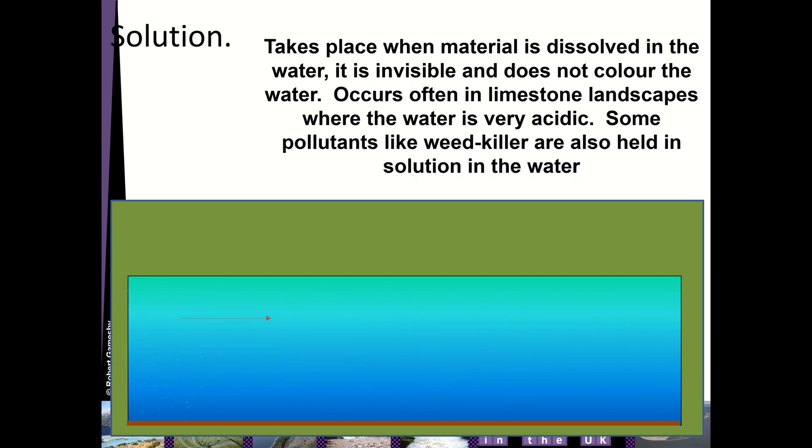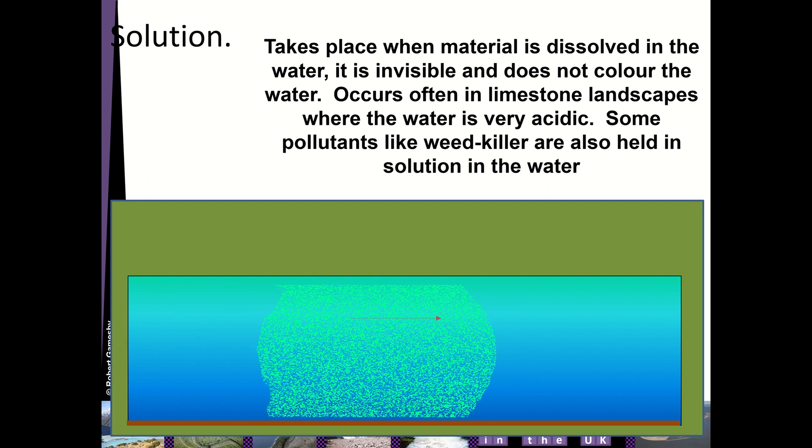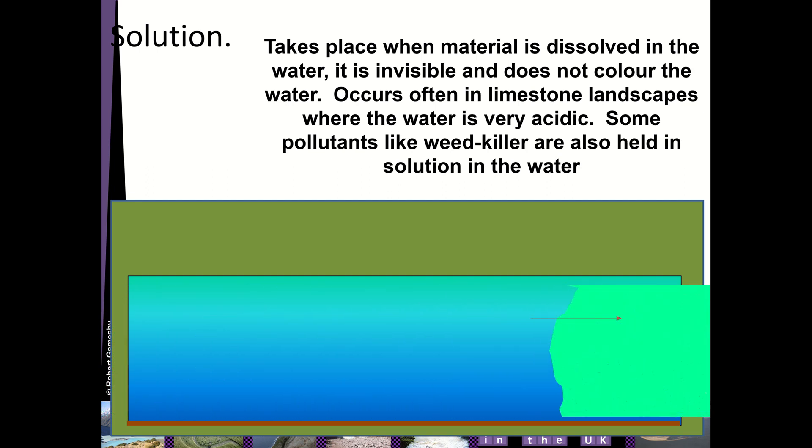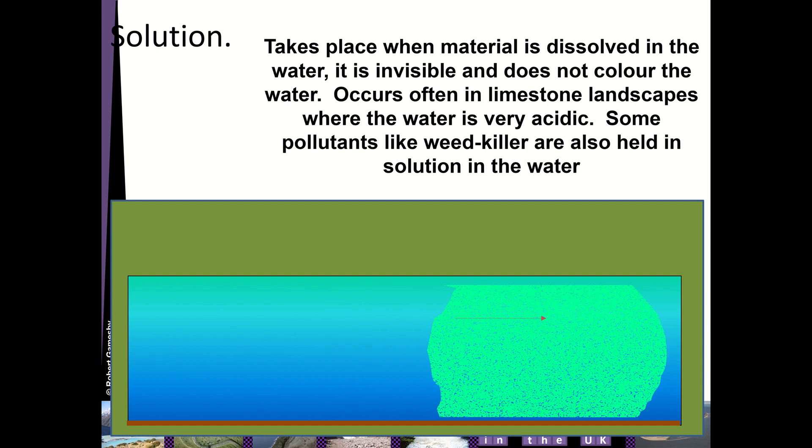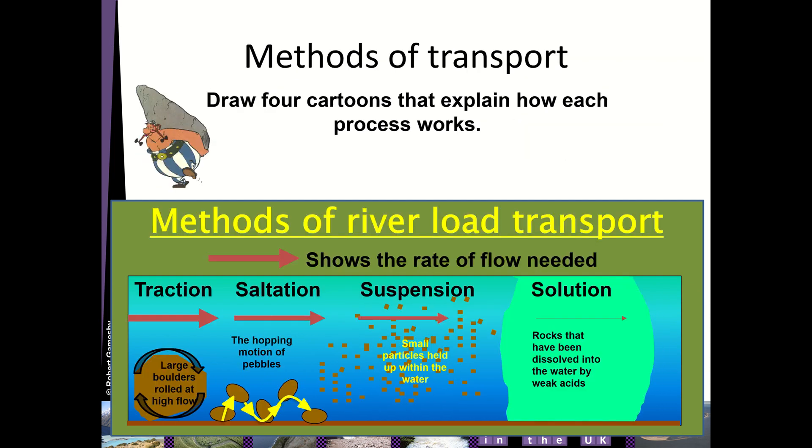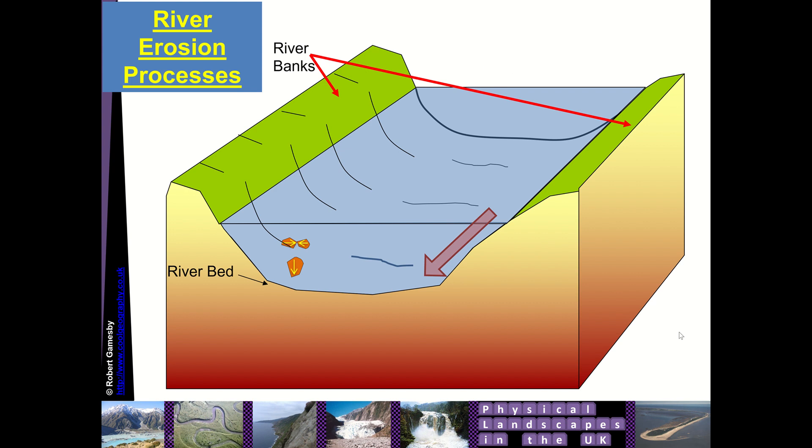River solution, that's where material is dissolved into the water. That occurs where we have acidic river water and rocks like limestone that are susceptible to being dissolved. This sort of summarizes it from the little Obelix there, and as we go, as the flow decreases in speed, we'll go from traction through to solution.